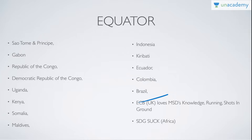If you open your map, you will find all these countries — a total of 13 countries are crossed by the Equator. Since MS Dhoni retired recently, our mnemonic is based on him. ECB — that is the English Cricket Board, just like our BCCI — ECB of UK. They love MSD's knowledge, running, shorts, and ground.